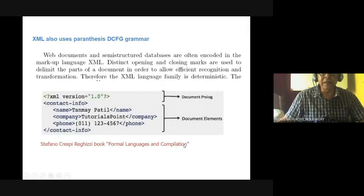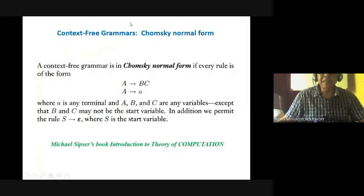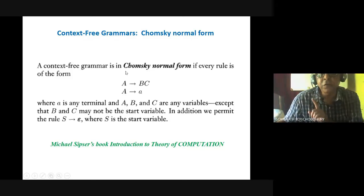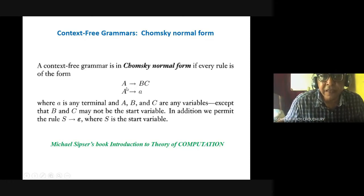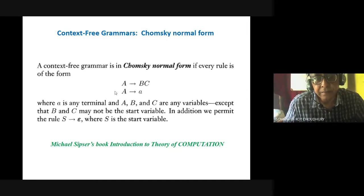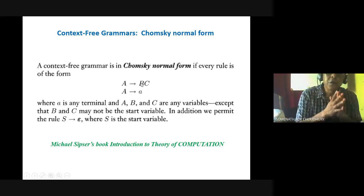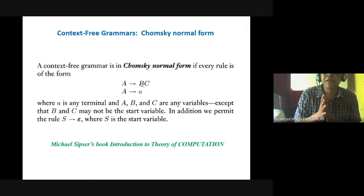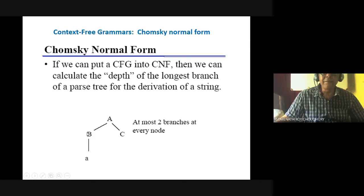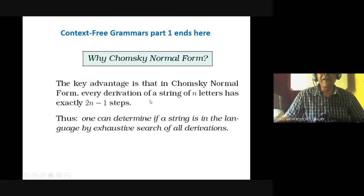This is the Chomsky Normal Form — any context-free grammar can be converted to Chomsky Normal Form. Chomsky Normal Form has one variable on the left-hand side and two variables on the right-hand side, all the time. Why is Chomsky Normal Form required? Because it is binary — if all production rules are put into Chomsky Normal Form, parsing or recognition will be much better. A variable can have two children or one child; if one child, that is a terminal; if two children, those are variables. A key advantage: every derivation of a string of n letters has exactly 2n−1 steps.